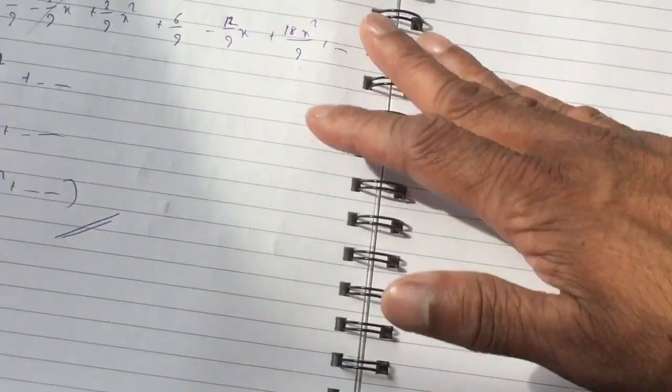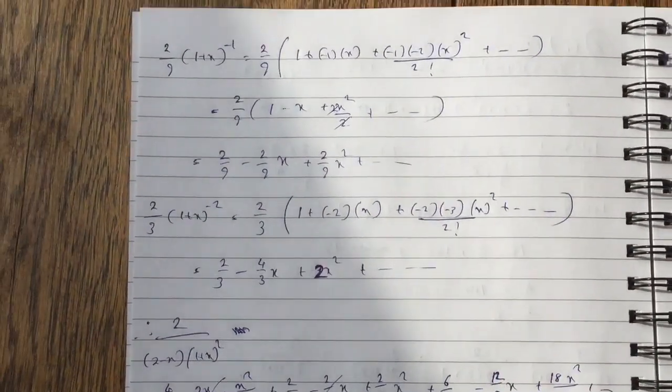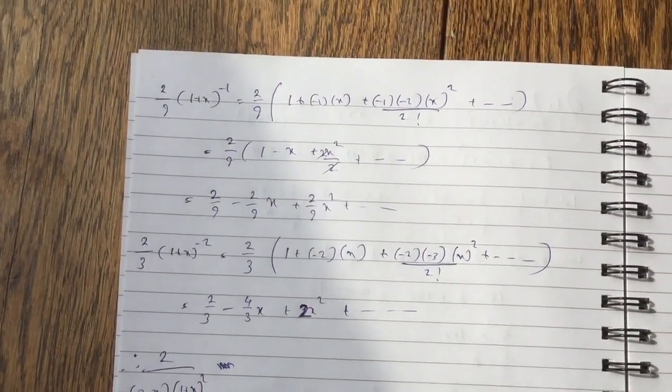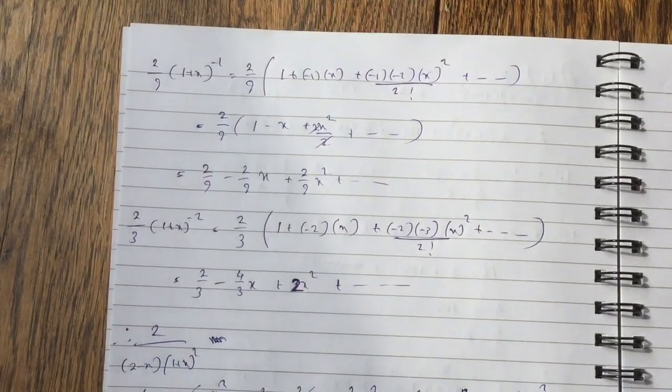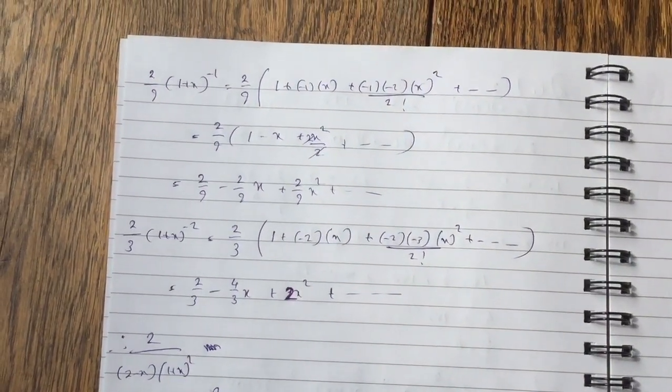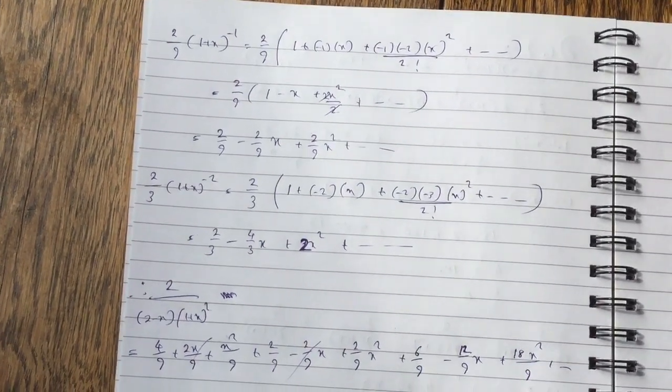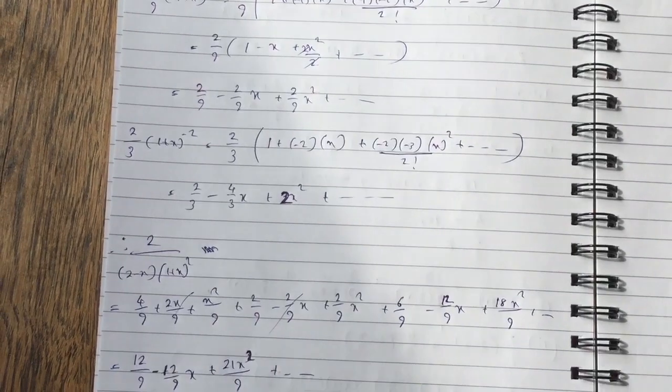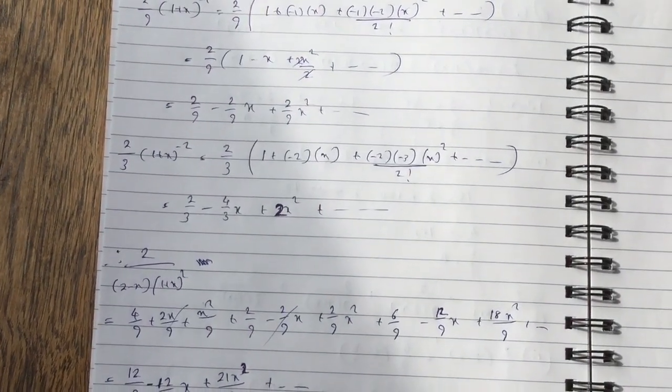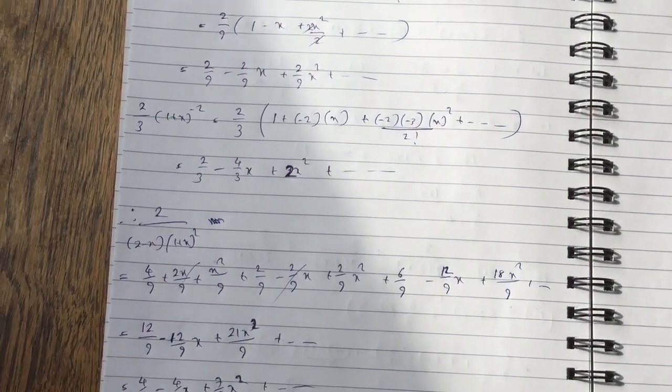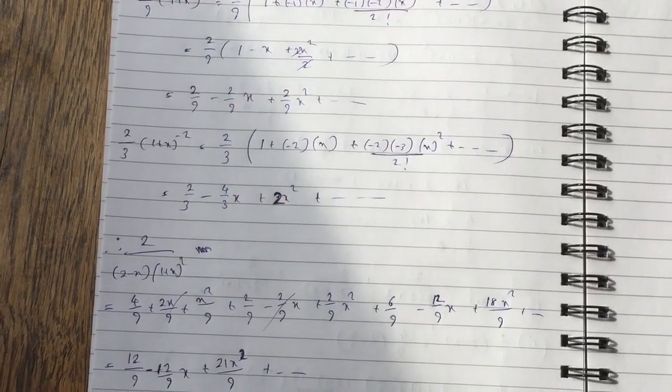For the second fraction, similar kind of story. You just expand it. So it would be 2 ninths, 1 plus x to the minus 1. When you expand it, you get 2 ninths minus 2 ninths x plus 2 ninths x squared. And for the third one, it's the same thing. So 2 over 3, 1 plus x to the minus 2. You expand it, and you get 2 over 3 minus 4 over 3x plus 2x squared.